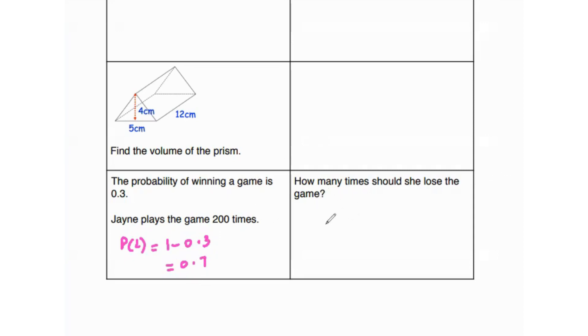So how many times would she lose the game? We would do 0.7 times the number of times she played the game, 200. So move the decimal one place to the right. Cancel out a zero. So now we're doing seven times 20. And that's 140.